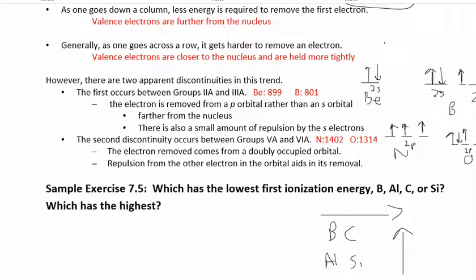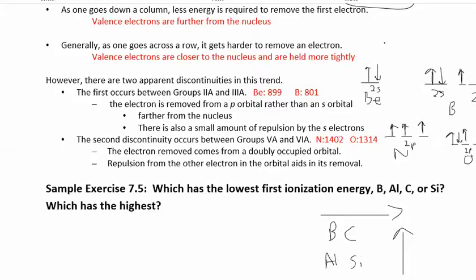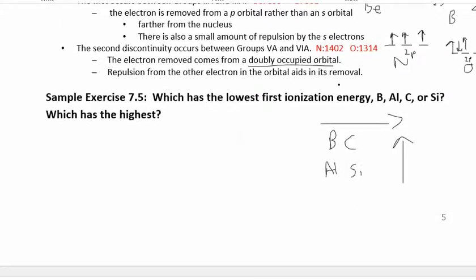Another discontinuity is between nitrogen and oxygen. Nitrogen has three p electrons — all three p orbitals are half-filled. Oxygen has four p electrons, so one orbital is fully occupied. You'd expect oxygen to have a higher ionization energy following the trend, but nitrogen actually does. It's easier to remove an electron from oxygen's doubly occupied p orbital because electrons sharing an orbital repel each other — the orbital doesn't want to be doubly occupied. Again, I'm not going to test you on the exceptions, just know the general rule.